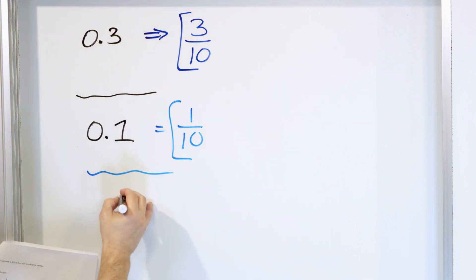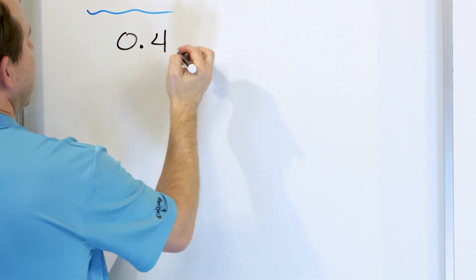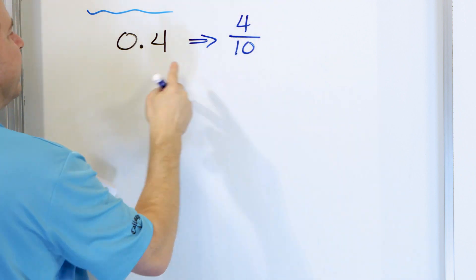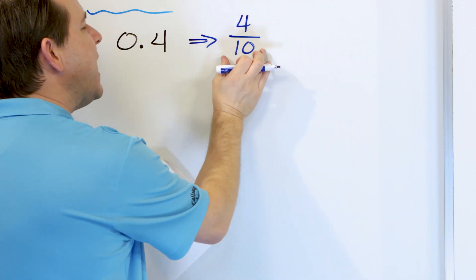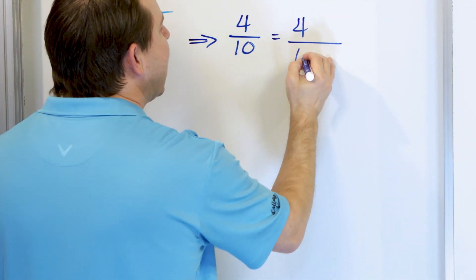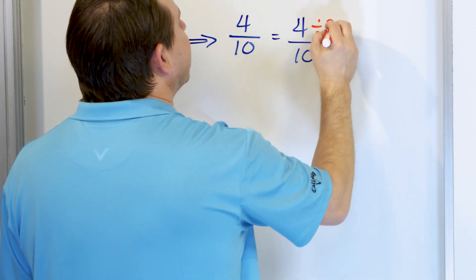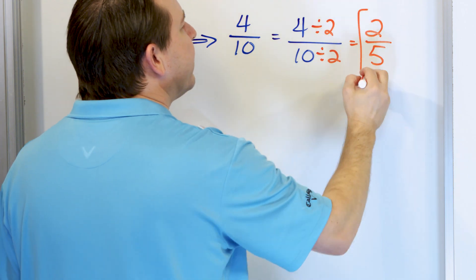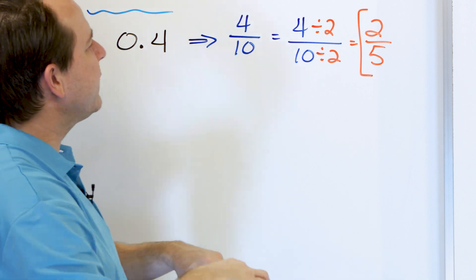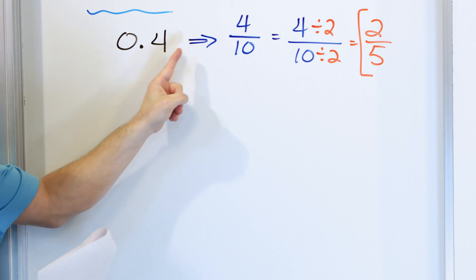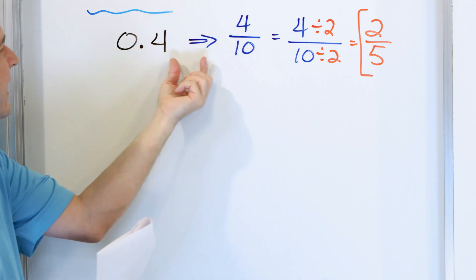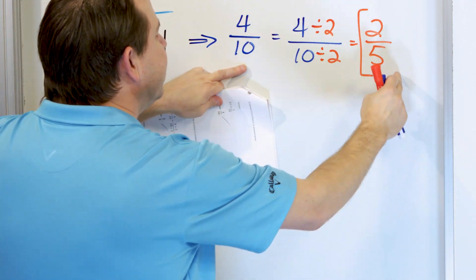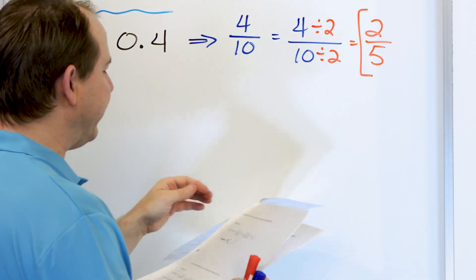Let's take a look at problem number three: convert 0.4 to a fraction. It's in the tenths place, and I have four of them, so I have four tenths. But this fraction is not fully simplified — they're both even numbers. I can take the four and the ten and simplify by dividing both by two. Four divided by two is two, and ten divided by two is five. I cannot simplify that any further, so two-fifths is the simplest fraction equal to 0.4. If you go to a calculator and divide two by five, or four by ten, you get the same result — these two fractions are equal; I've just simplified to something simpler.